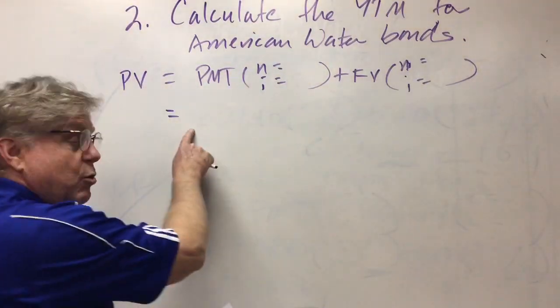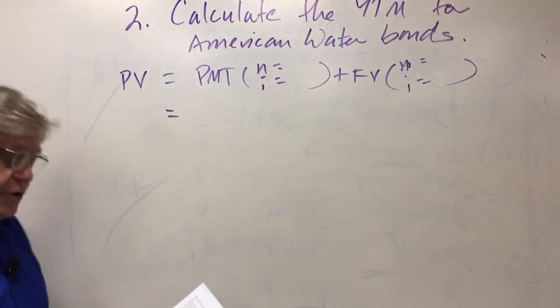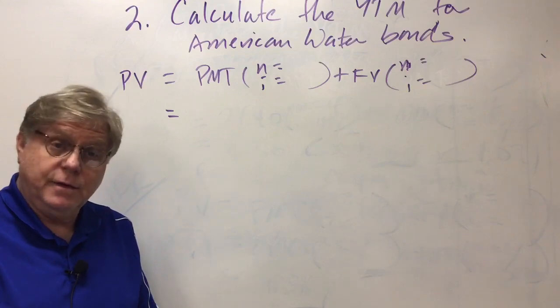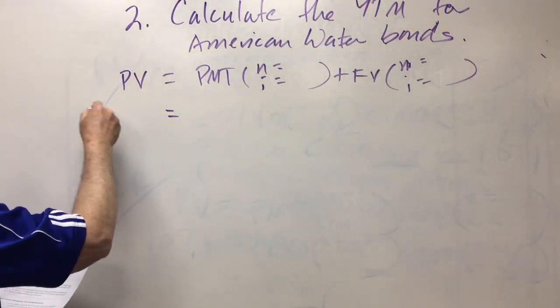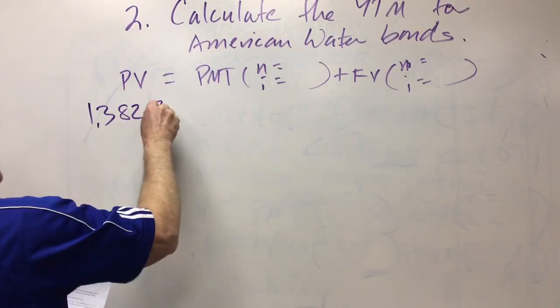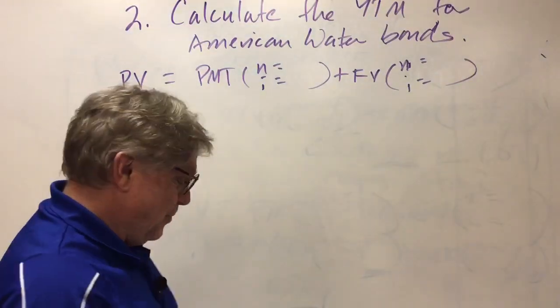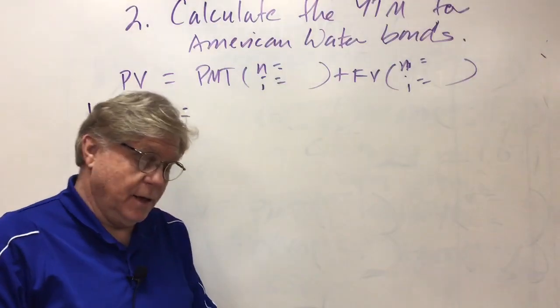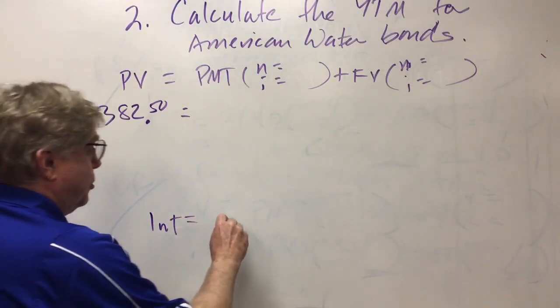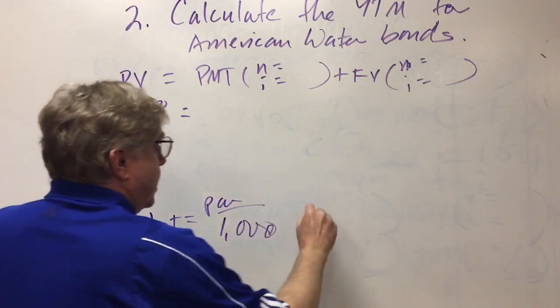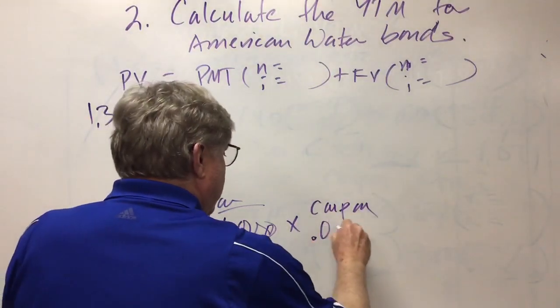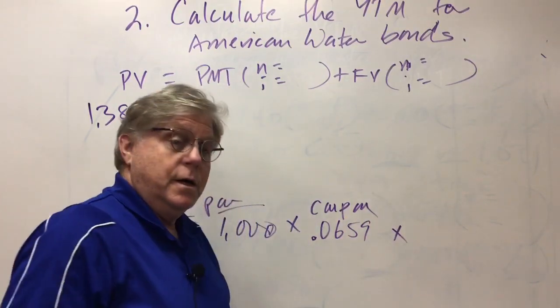First, we have to calculate the yield to maturity. Let's work with the basic formula. We can start by inserting values. If these bonds are trading for 138.25, that's 138.25 percent of the thousand dollar par value, so that is $1,382.50. That's our first value, the price of the bond. Next we're going to need the coupon payment. The coupon interest is the principal at par value times the coupon rate.